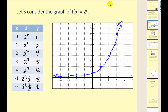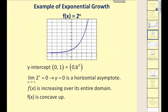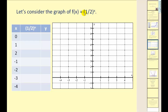Let's look at some characteristics of this graph. The y-intercept is the point (0, 1). The limit of the function as x approaches negative infinity equals zero, so we have a horizontal asymptote of y equals zero. The function is increasing over its entire domain, and it is also concave up.